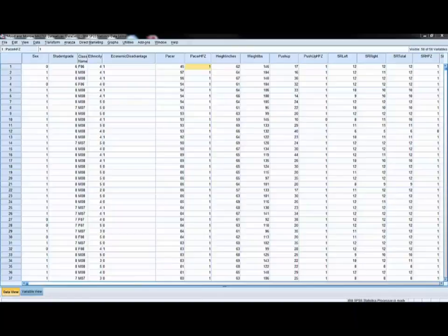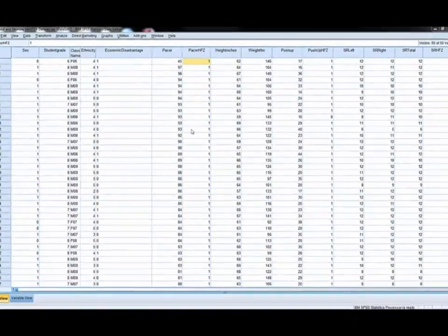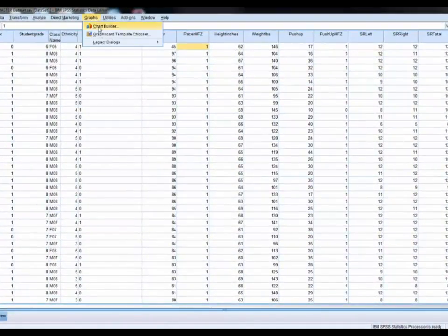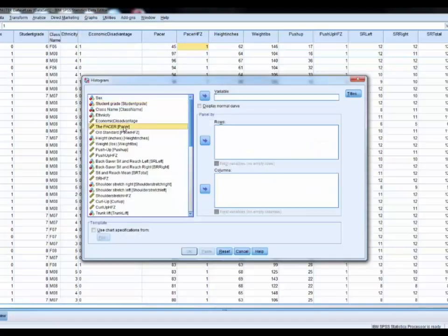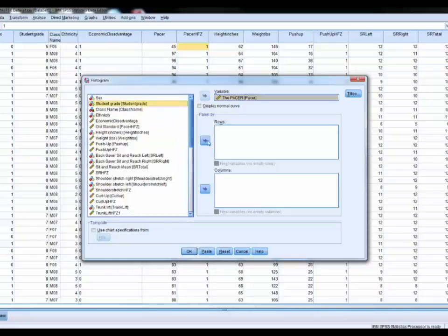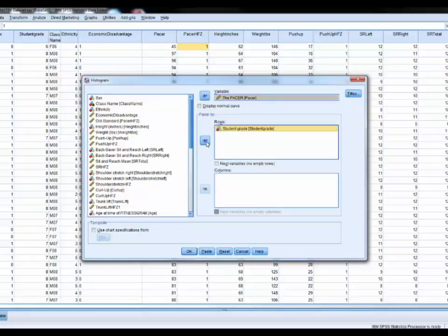So first let's graph these to see what the graphs look like. We'll go to graphs, legacy dialogues, histogram. We'll put Pacer as the variable. We'll put student grade as the rows or different distributions which you'll see in just a second. So then we'll say okay.